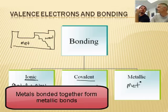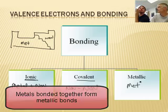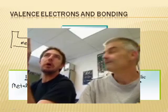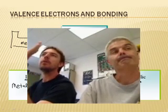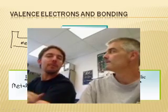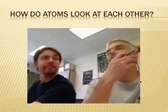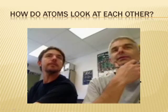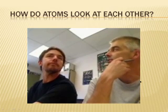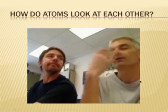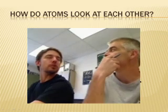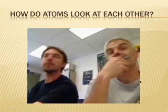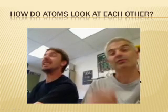My question then is, an atom doesn't really know that it's a metal or know that it's a non-metal. So how do they know what kind of bond to form with another atom? Well, I think we have a video clip that would help us with that. So how do atoms actually view each other? It's like, how do I view you as a person? Why don't we watch this little clip?